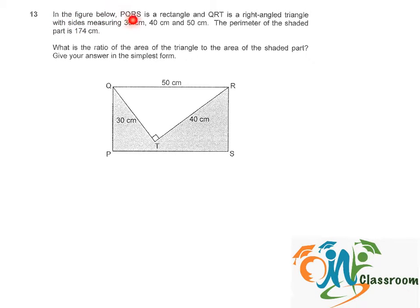In the figure below, PQRS is a rectangle and QRT is a right-angled triangle with sides measuring 30cm by 40cm by 50cm. The perimeter of the shaded part is 174cm. What is the ratio of the area of the triangle to the area of the shaded part? Give your answer in the simplest term.